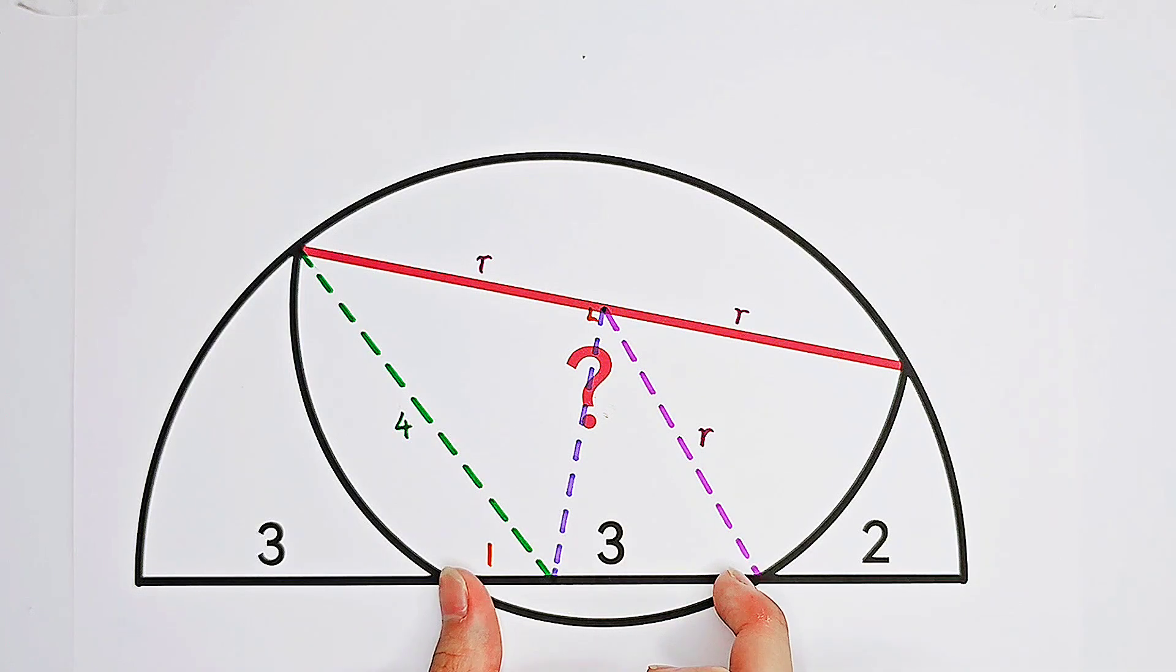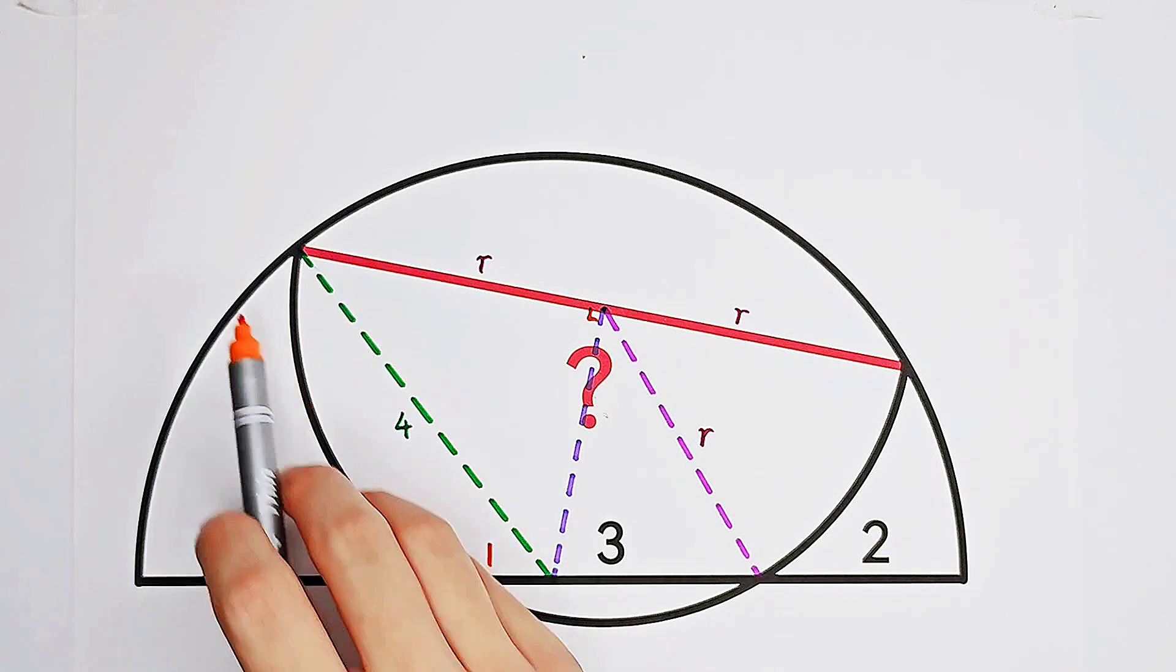This one is a chord of the small semicircle. So it means if we use our theory that the perpendicular of a chord always runs through the center. So in a small semicircle, this one is the chord. So the perpendicular of this chord always runs through the center.